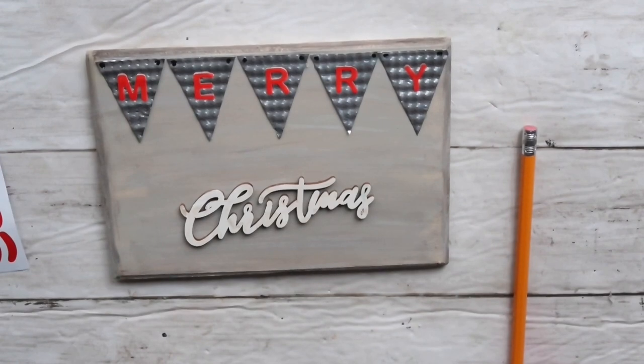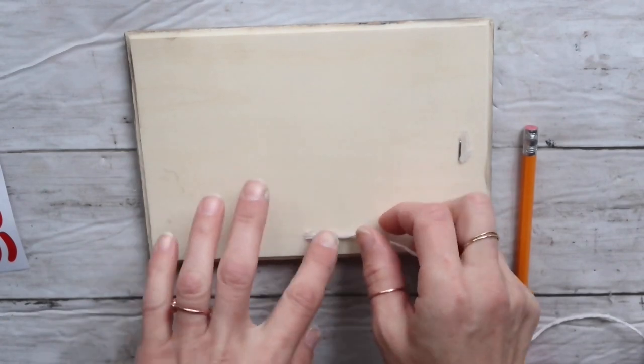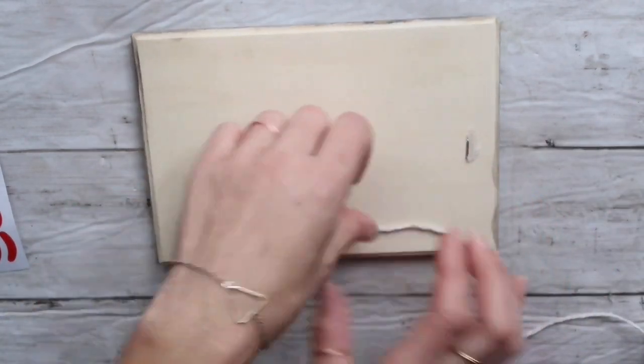Now I'm taking this black marker and adding little dots on top of my banner to represent little pins that held it in place. Then I'm taking my jute twine that came from the dollar tree and wrapping it a few times on the bottom.